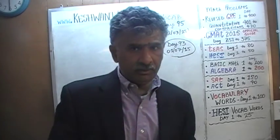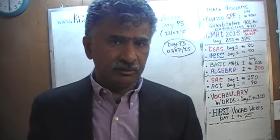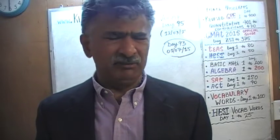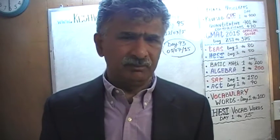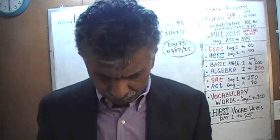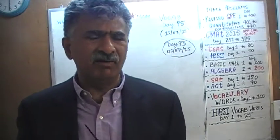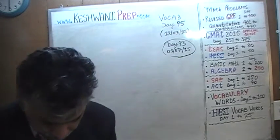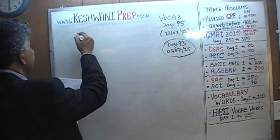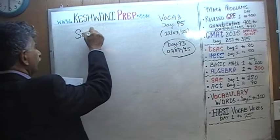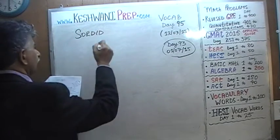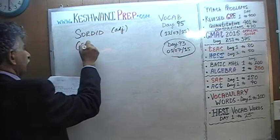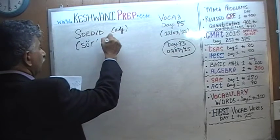The first two or three words that we're going to learn today all have to do with something being disgusting, horrible, repulsive, just terrible, bad — you don't want to deal with it, it's dirty, it's foul. Let's learn the first word. The word is an adjective, and the word is: sordid.